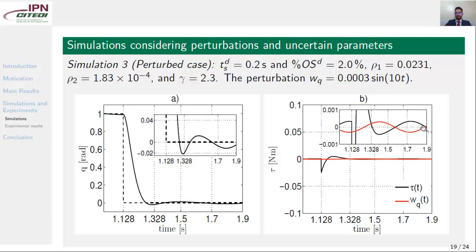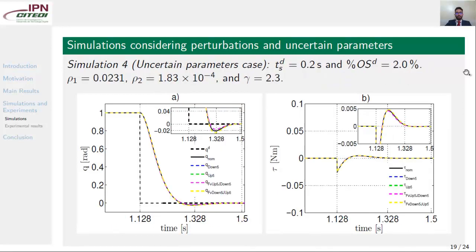In the fourth simulation, we considered uncertainty on the parameters. So, we took inertia and the viscous friction coefficient and changed its values by 5 percent up and down. And that's what we can see here in all these colors. In the zooming area, we can see that no significant change is appreciated. Also, the control input has no significant change. So, we achieved our goal.